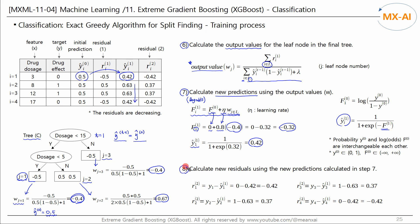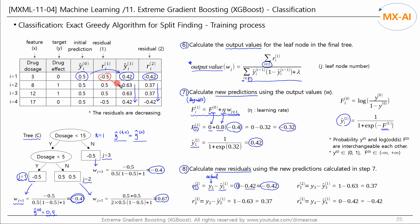Step 8 computes new residuals using the new predictions. For the first data point, subtracting the new predicted value of 0.42 from the actual Y value of 0 gives a new residual of negative 0.42. All residuals for the remaining data points are calculated in the same way and updated accordingly.